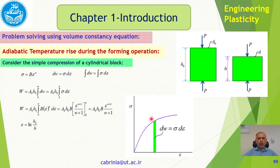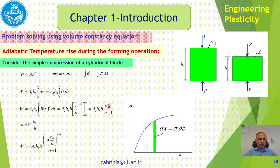The energy is the area under the curve up to the point of deformation. Also, epsilon equals ln(H0/H), because unlike a tensile test where length increases, in compression the length decreases. Therefore epsilon equals ln(H0/H), and substituting into the expression for W, we get W equals A0 H0 times B times [ln(H0/H)]^(n+1) divided by n+1.